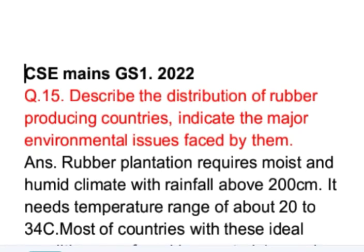This is question number 15 from GS Paper 1 of Maine's 2022 examination. The question asks to describe the distribution of rubber producing countries and indicate the major environmental issues faced by them. This question has two parts: first, we have to write about the rubber producing countries of the world, and second, we have to write about the environmental issues faced by these rubber producing countries. We will start the answer with a brief introduction about the climatic conditions required for rubber plantation and the regions of the world where these conditions are found.